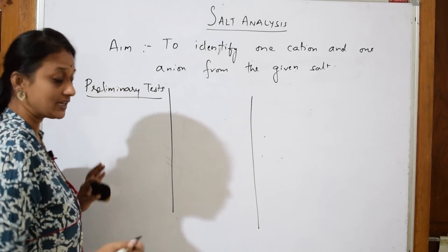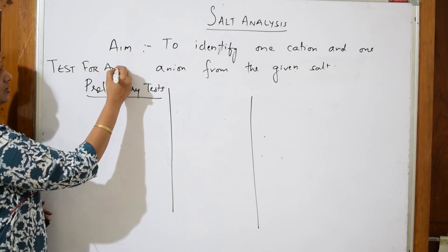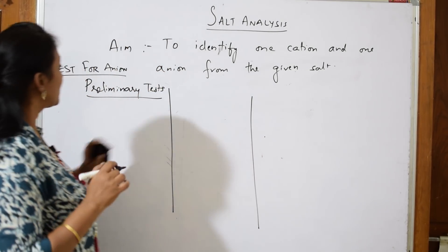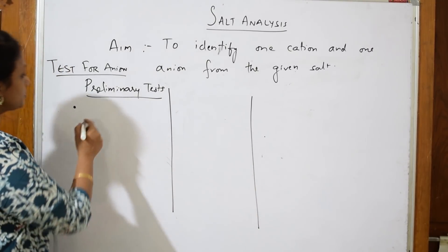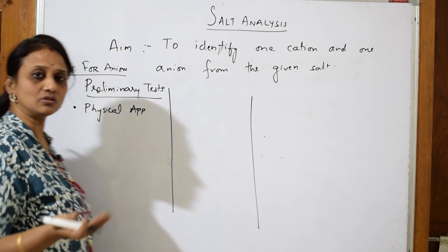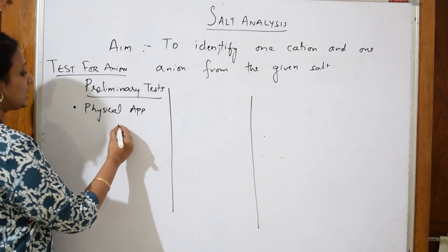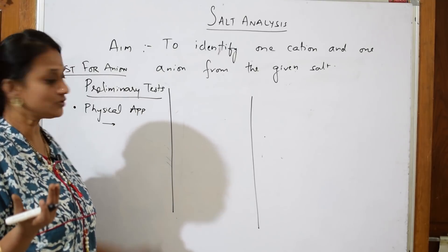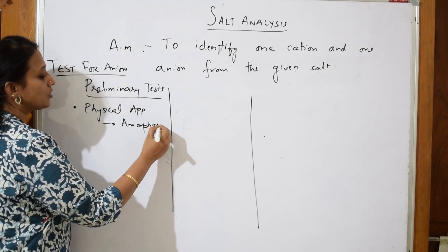In salt analysis, there are three different steps. First is the preliminary test, which everyone has to do. Preliminary tests will help you identify the anion present easily. In the preliminary test, the first and most important easy test to perform is the physical appearance test. As soon as the salt is given to you, take it in a watch glass or on paper and physically observe it — whether it is amorphous or crystalline in nature.